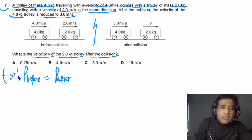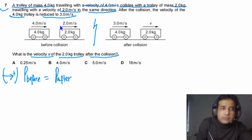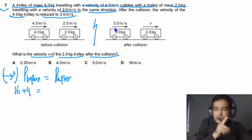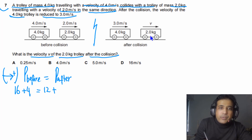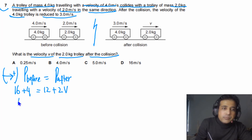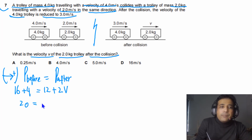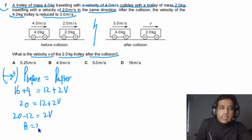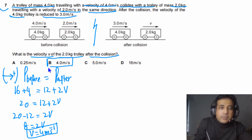Taking rightward as positive: momentum before = (4 × 4) + (2 × 2) = 16 + 4 = 20 kg·m/s. Momentum after = (4 × 3) + 2v = 12 + 2v. Setting equal: 20 = 12 + 2v, so 2v = 8, giving v = 4 m/s. The answer for Question 7 is 4 m/s.